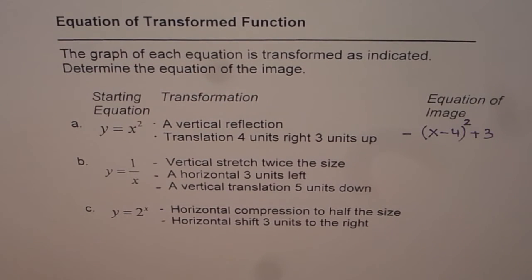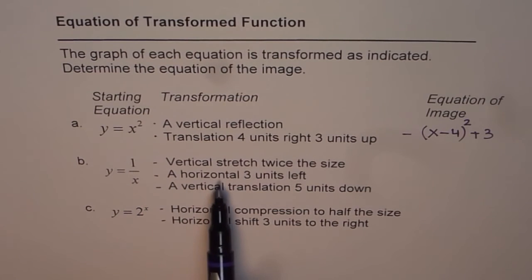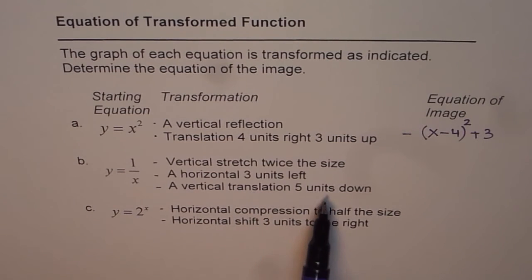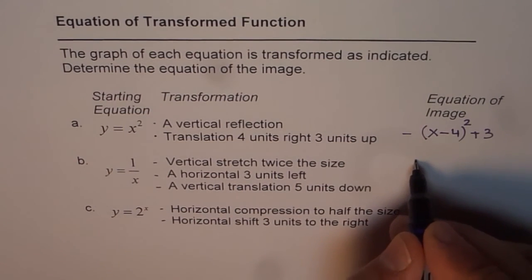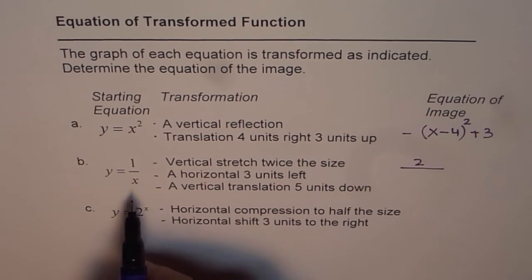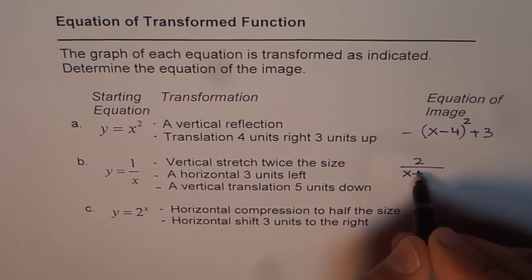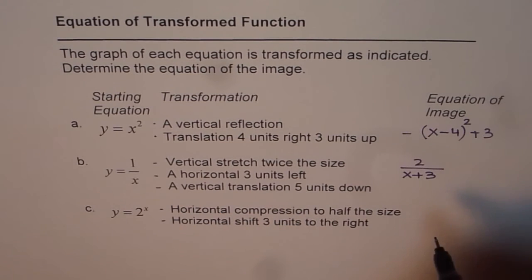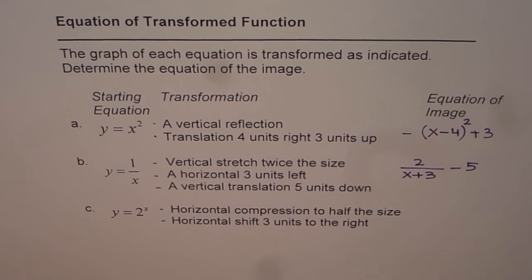Now for y equals 1 over x: vertical stretch to twice the size means we multiply by 2, giving 2 over x. Then horizontal translation 3 units left means x plus 3 in the denominator. And vertical translation of 5 units down means minus 5. So the equation for the transformed function becomes y equals 2 over (x plus 3) minus 5.